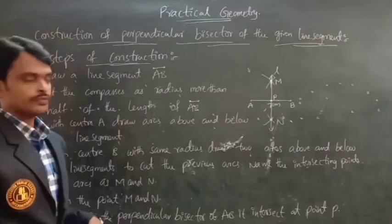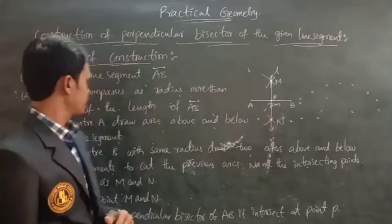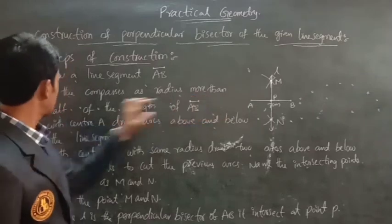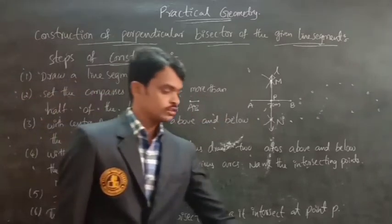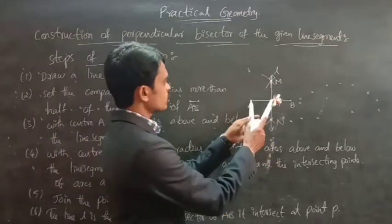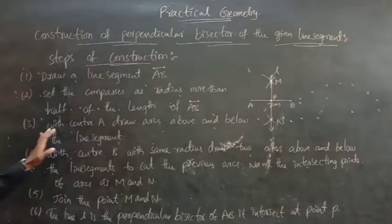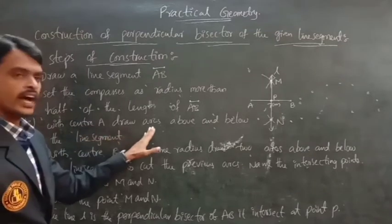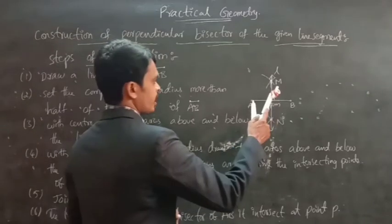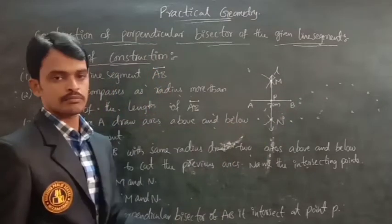Steps of construction. First, draw a line segment AB. Second step: set the compass to a radius more than half of the length of AB. So we should set the compass to a radius more than half of the length of AB. Now, third step: with center A, draw arcs above and below the line segment.